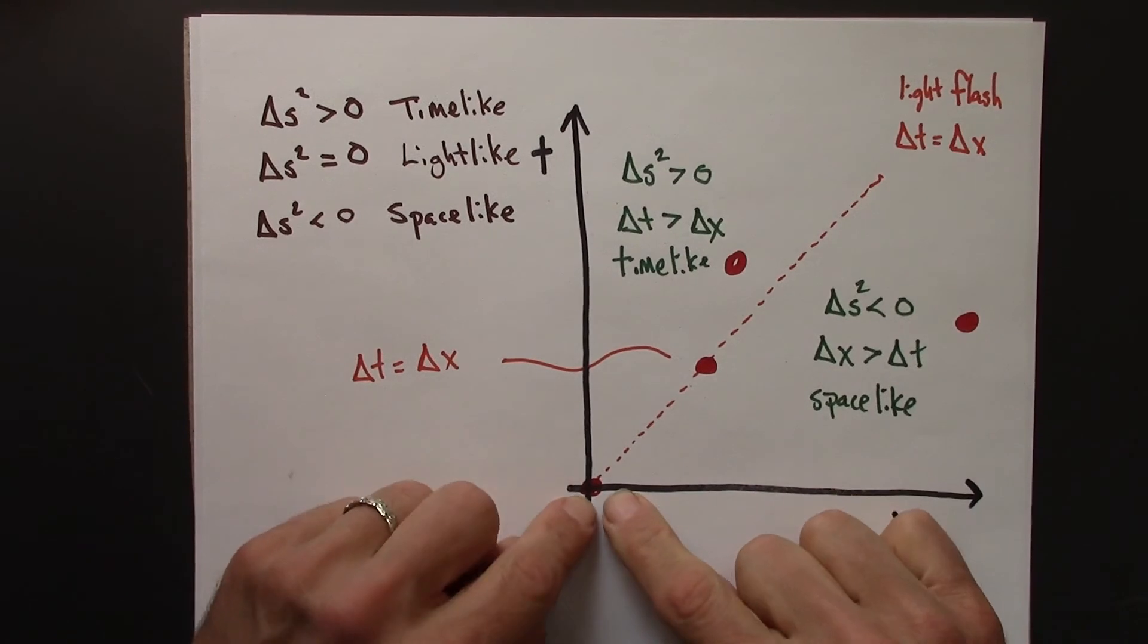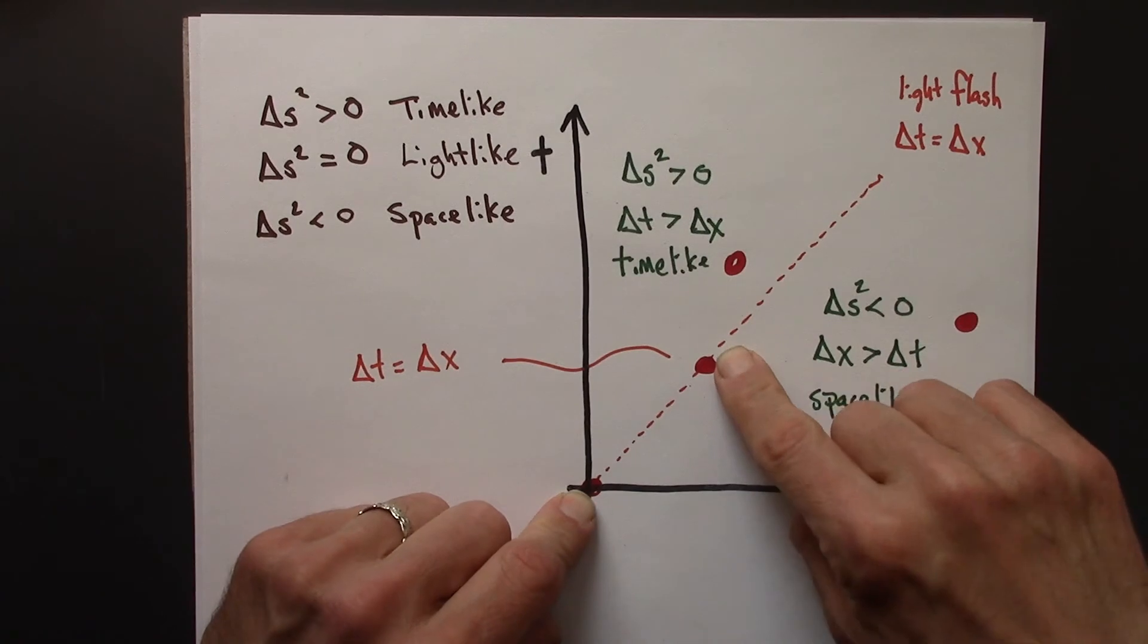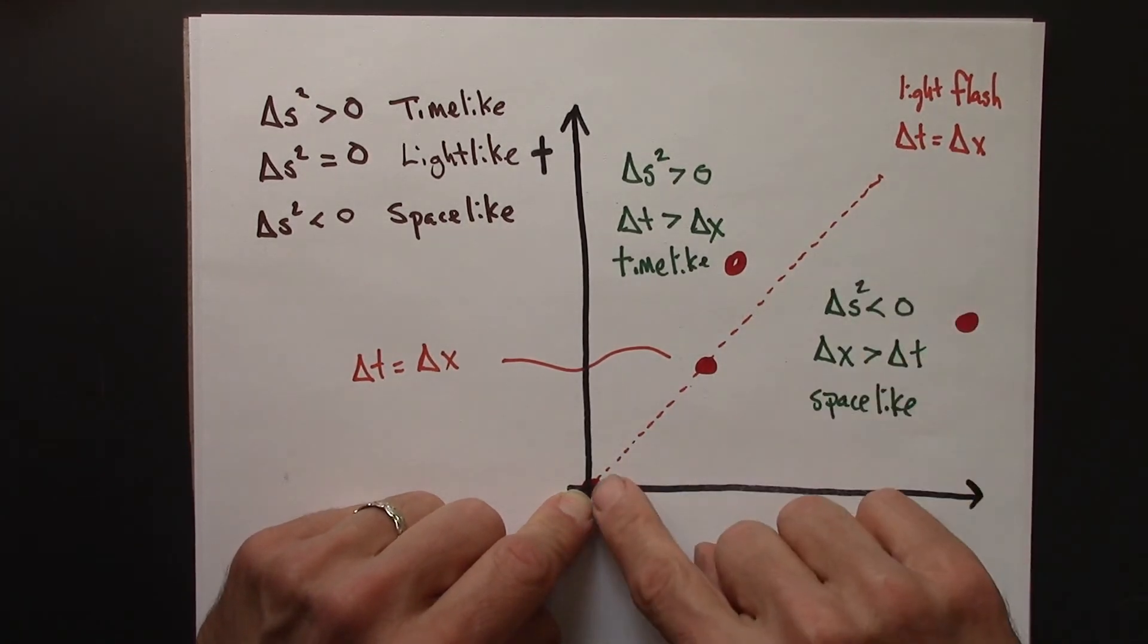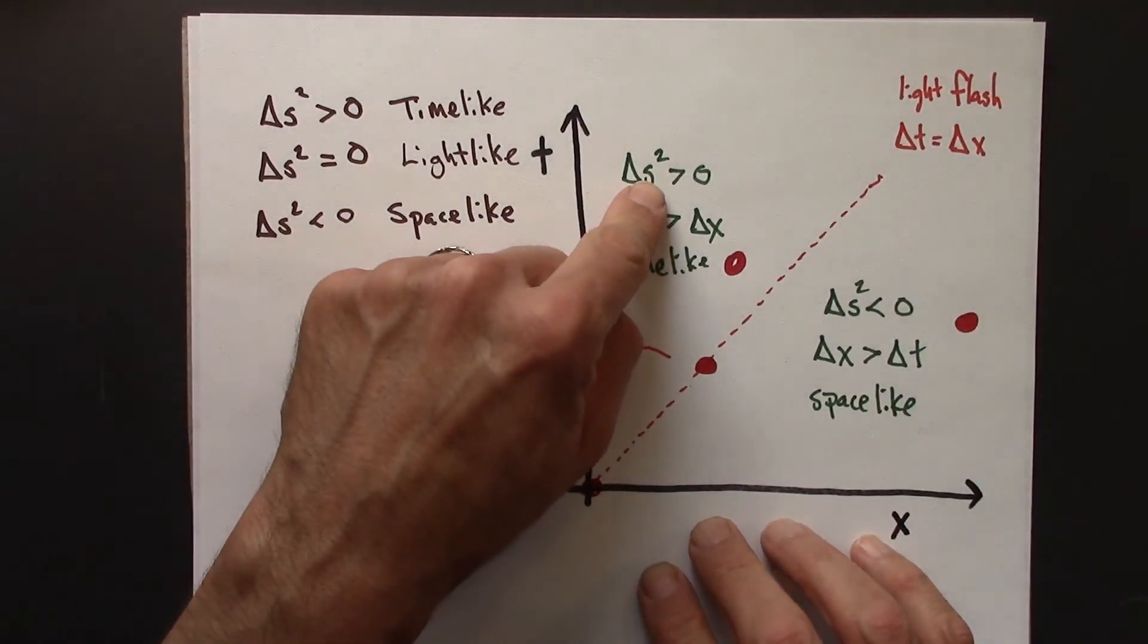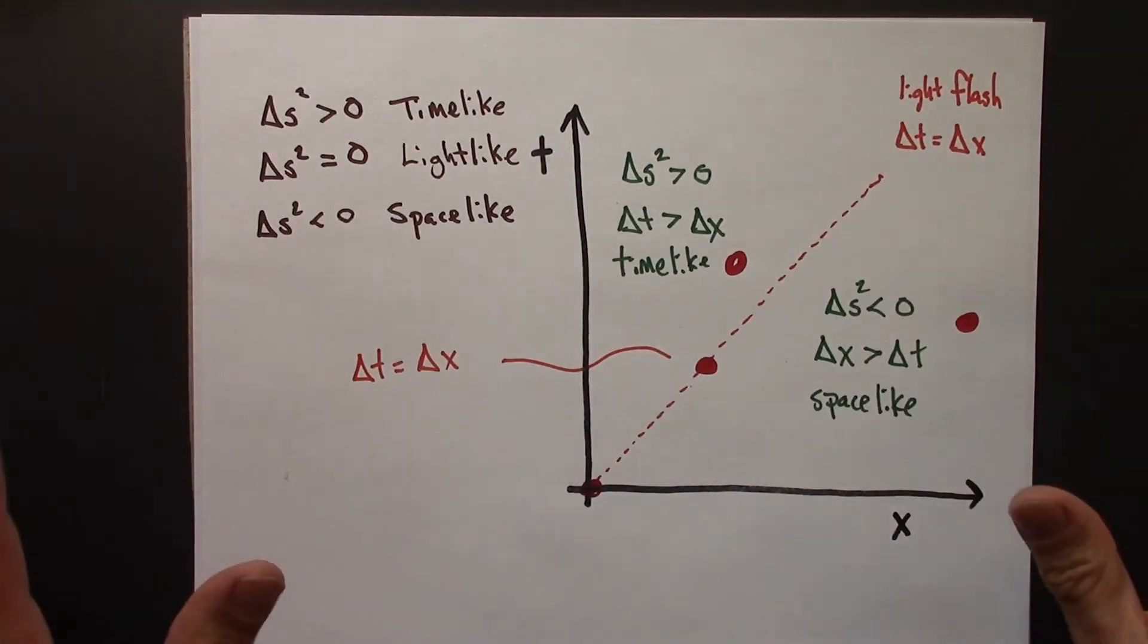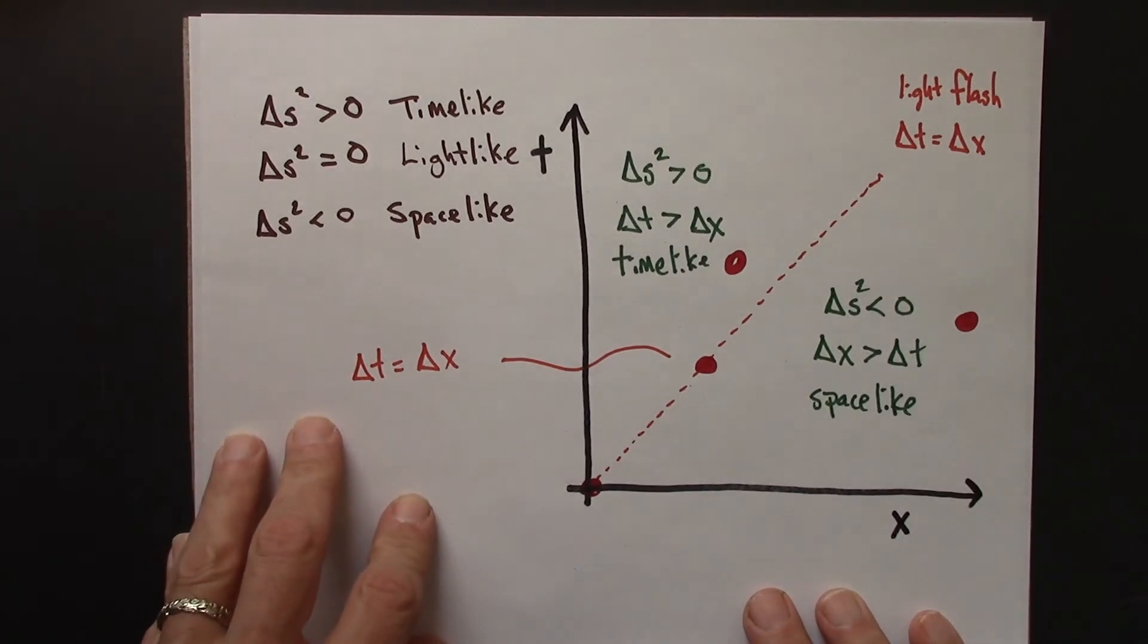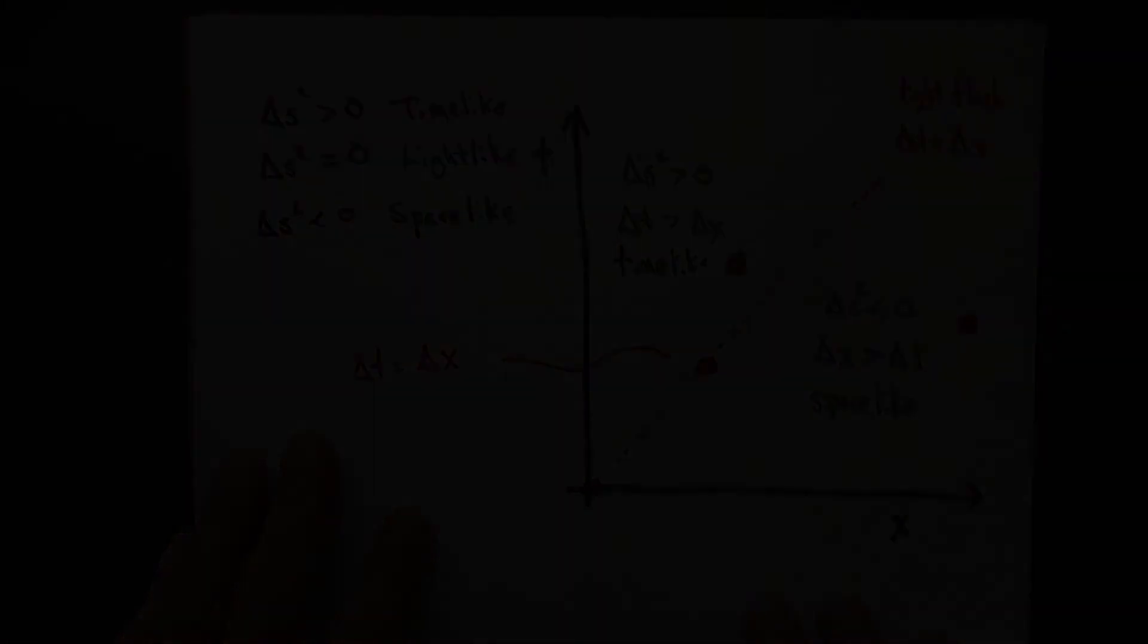And so why is this light-like? The reason is that these two events could be connected via a light flash. So light-like is this sort of separating region. Over here we have time-like, and over here we have space-like. So this is a summary of the three different types of space-time intervals, and in the next couple videos we'll look and think about what this tells us about the causal structure of space-time itself.